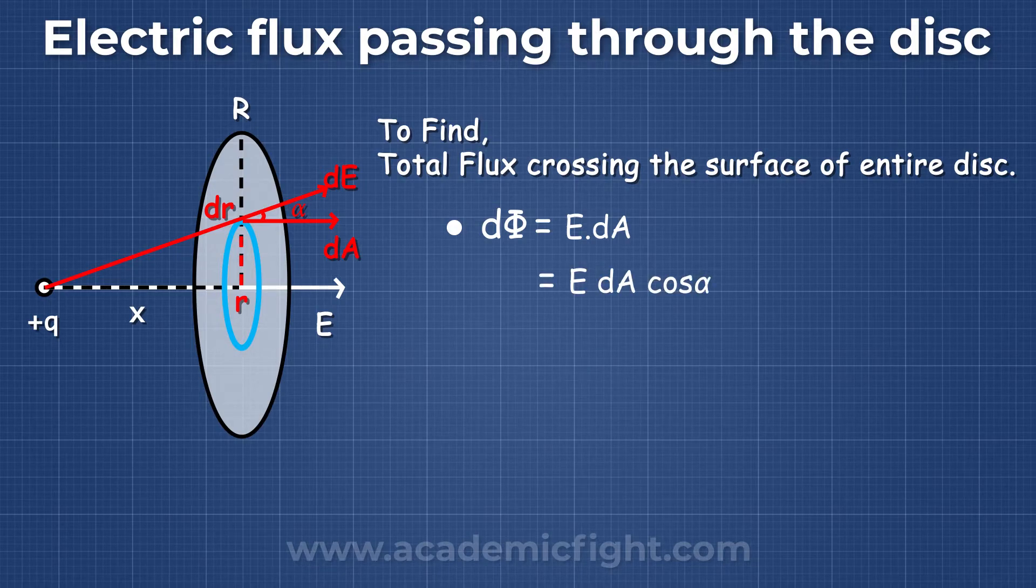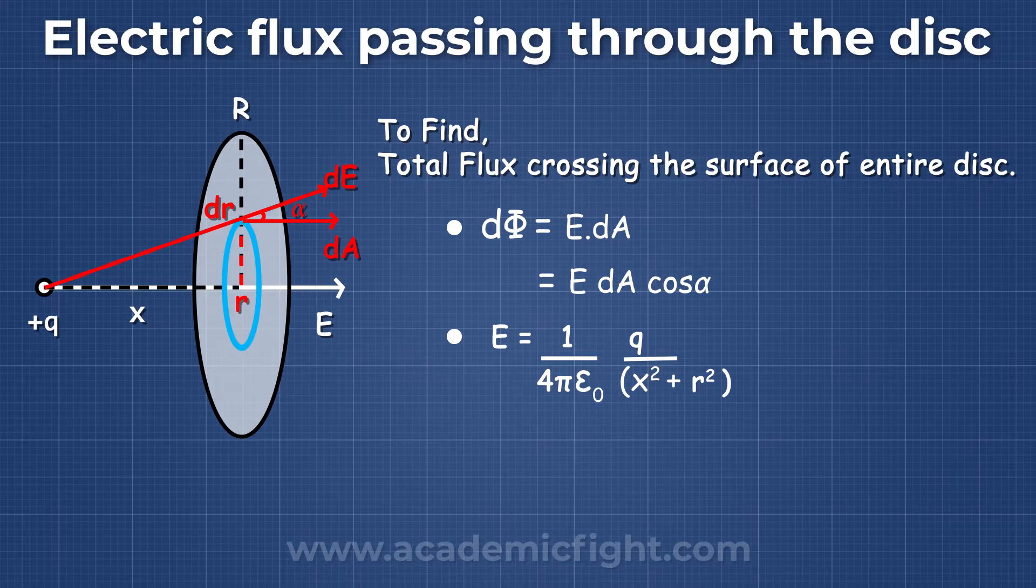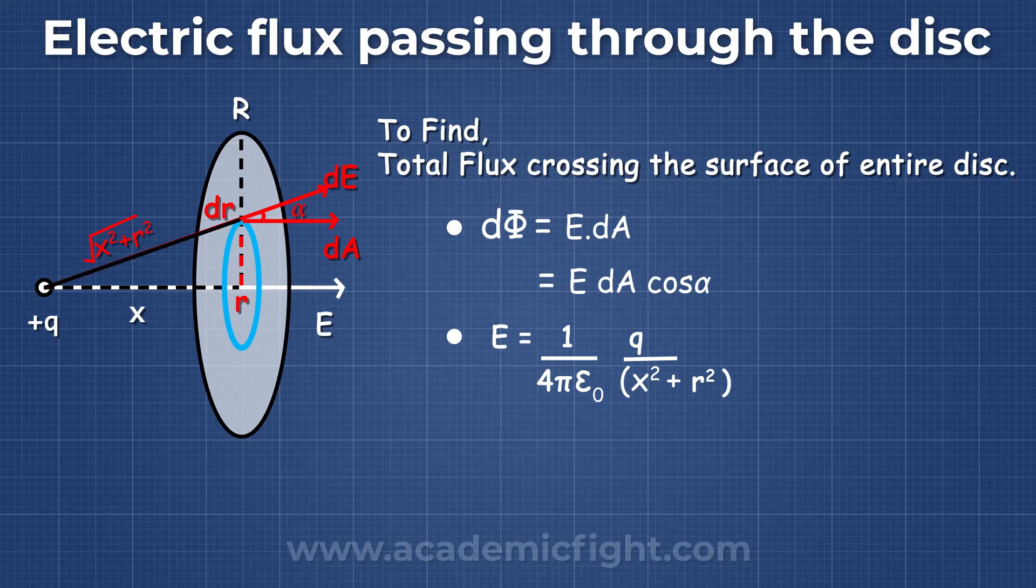Now, let's calculate the value of the electric field. As per the formula, we have E = 1/(4πε₀) × q/(x² + r²), because the distance between dA and the charge is √(x² + r²).